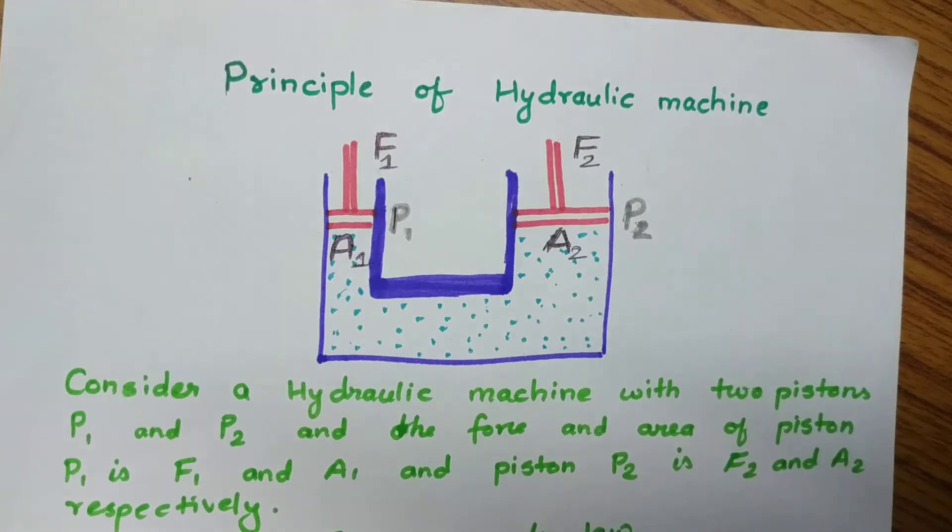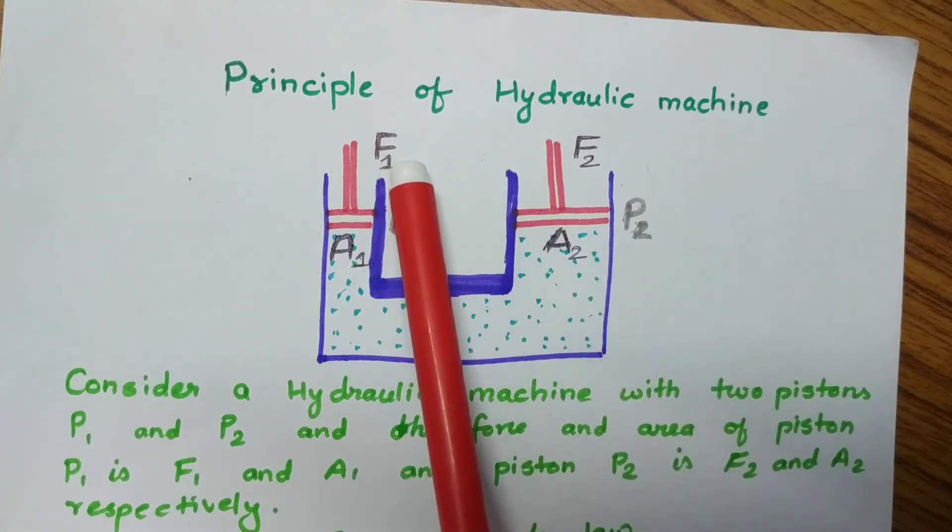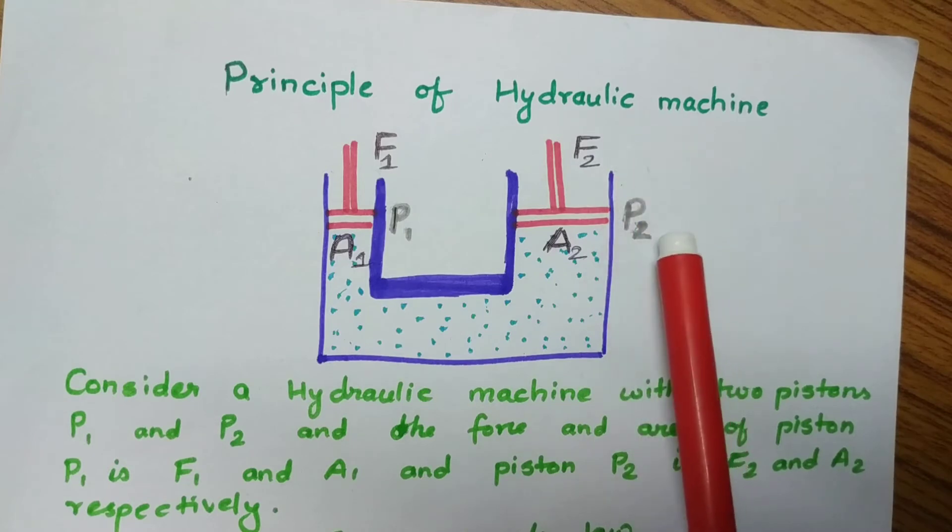You can see the figure I've drawn - a hydraulic machine with two pistons, P1 and P2. Piston P1 is smaller, piston P2 is larger. I've considered two forces: F1 in piston P1, and F2 in piston P2.